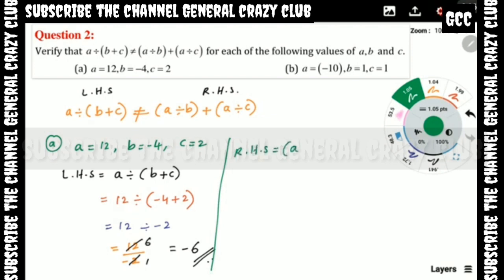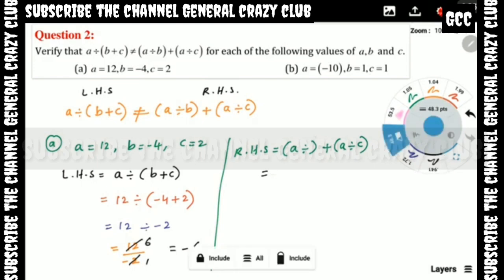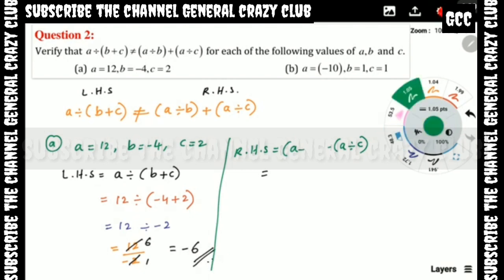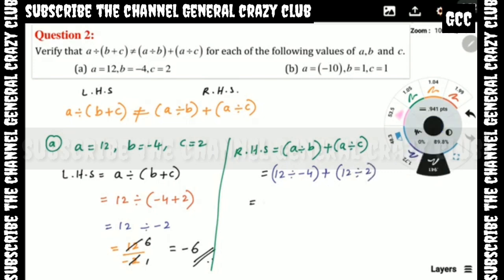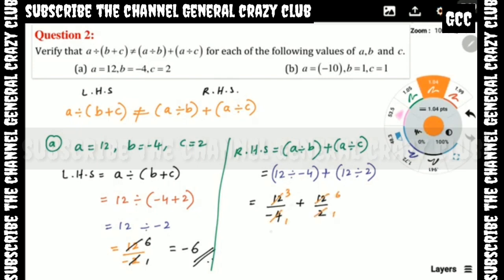Right-hand side equals a/b plus a/c. Substituting values: 12 divided by minus 4, plus 12 divided by 2. Simplifying: 4 threes are 12 and 2 sixes are 12, giving us 3 by minus 1 plus 6 by 1, which is minus 3 plus 6.